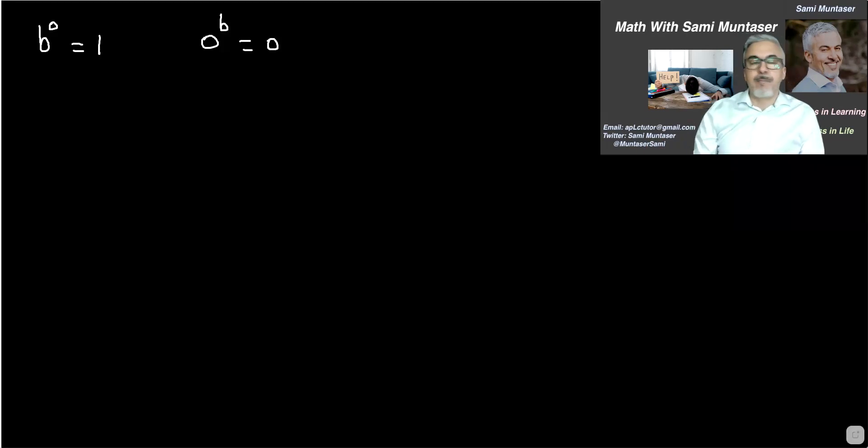Hi again, this is Sami. So on my last video, I've shown you how anything to the power of 0 equals 1. So we showed you how b to the 0 equals 1 or any number, b being any number to the power of 0 equals 1.